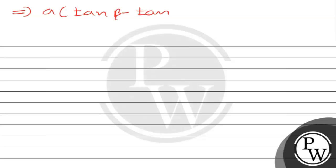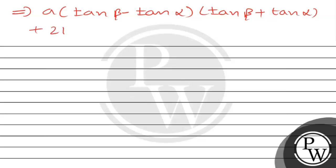A in terms of (tan β minus tan α) into (tan β plus tan α) plus 2B into (tan α minus tan β). This simplifies further to give us the result in terms of tan alpha plus tan beta.